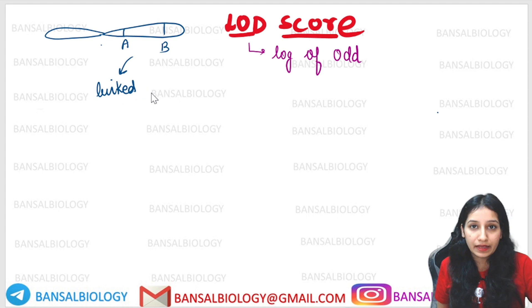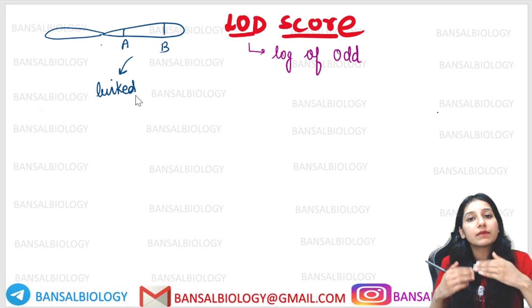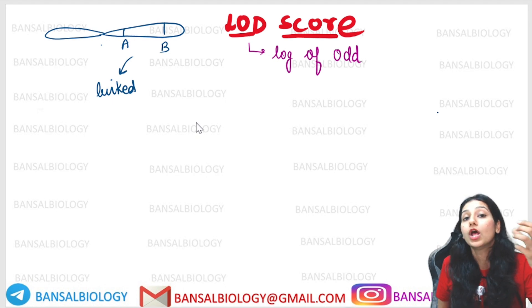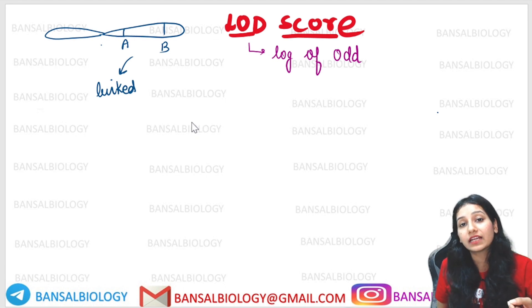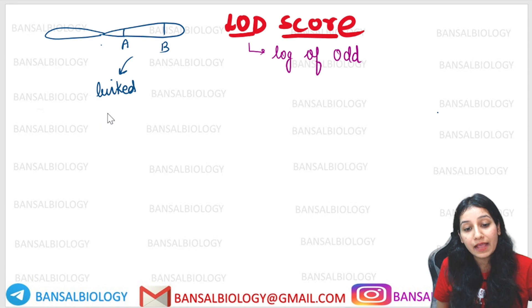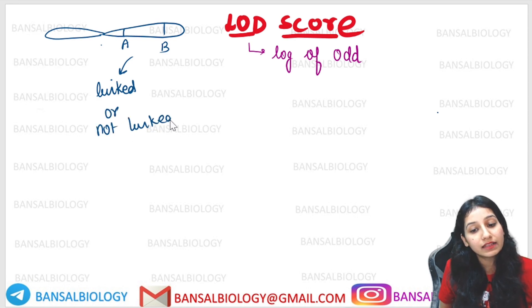So let's get started with the video. If we have two genes present, A and B, then we will see whether these two genes are linked or they are not linked. To determine this, we look at the LOD score.